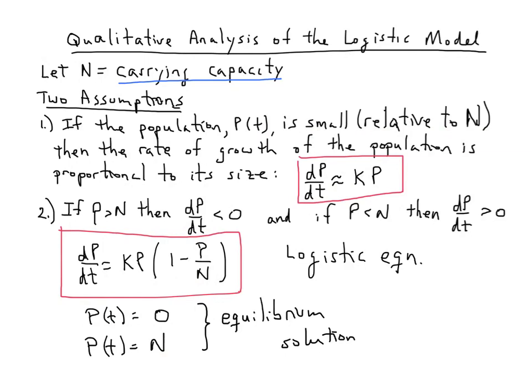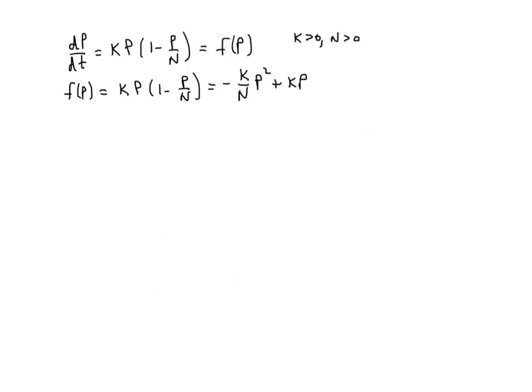What about the rest of the solutions? What if we're not at 0 or N? How do we use qualitative reasoning to understand what's going on with this equation?